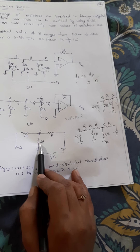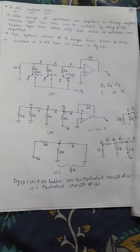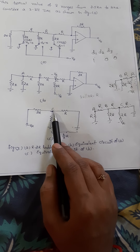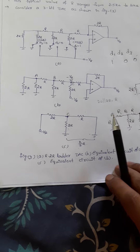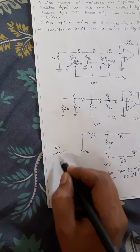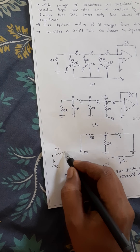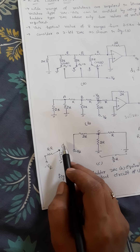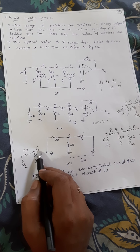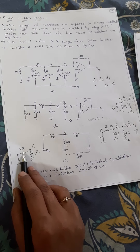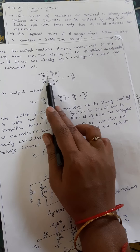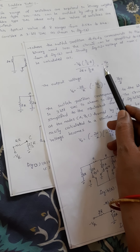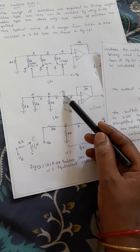R is in parallel with 2R, so you are going to get 2/3 R. So the equivalent is 2/3R and then minus VR. You can calculate the voltage at node C. The circuit shows 2R, minus VR, node C with 2/3R. The node voltage at C: Vc equals minus VR into opposite resistance (2/3R) divided by total resistance (2R plus 2/3R), which gives minus VR by 4.